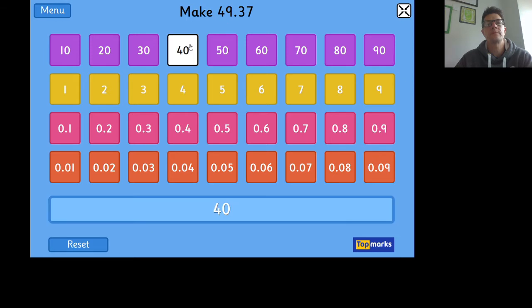Then we're moving to the ones column, and we've got nine ones. Now we're moving past the decimal point—these are not whole numbers. This is three tenths, so we're going to select 0.3.